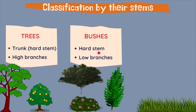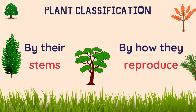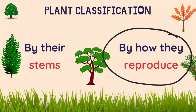Bushes have low branches instead of high branches. And finally, grasses, which have a soft and flexible stem like the grass, and they don't have branches. Let's go now to the classification by how they reproduce.